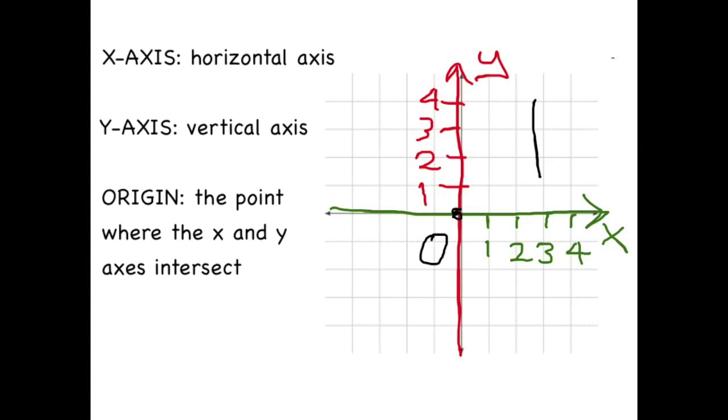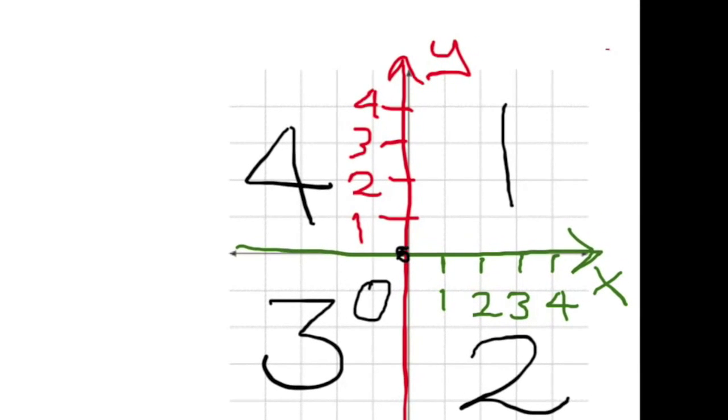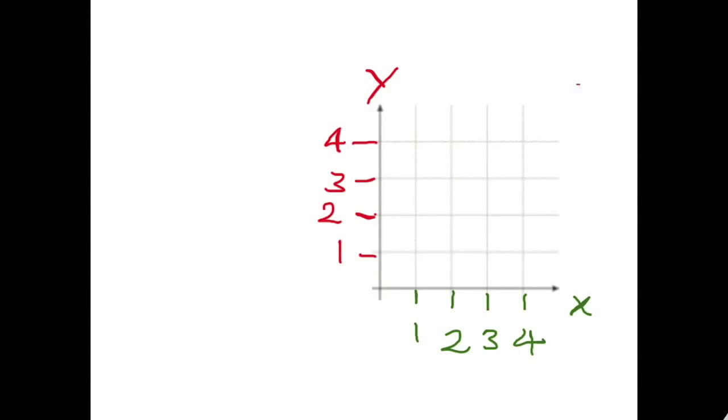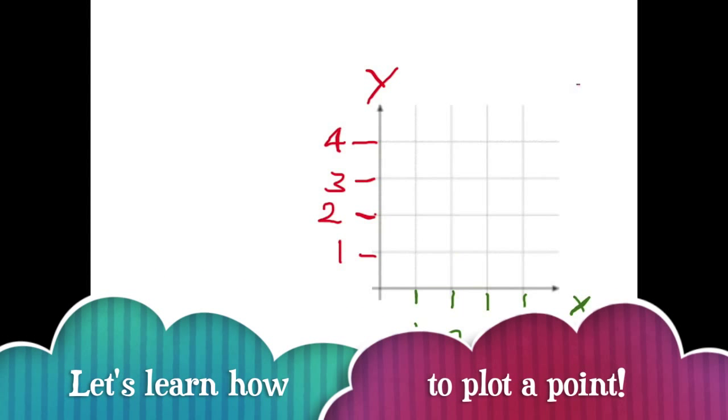A coordinate plane has four quadrants. Today, we are only going to focus on the first quadrant, the upper right quadrant. Now we understand the coordinate plane, so let's learn how to plot a point on it.